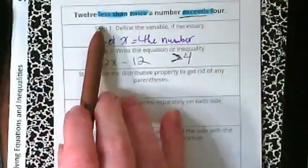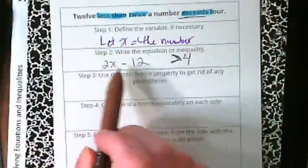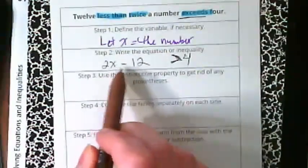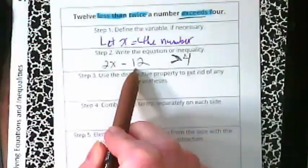So it starts off reading 12 less than twice a number exceeds 4. When I wrote this, notice my 12 less than is not the first thing in the number sentence.